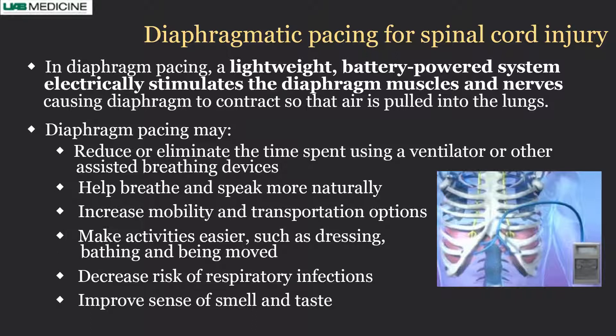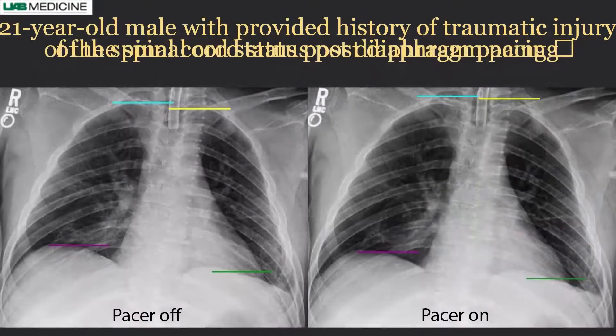Once the lungs start moving, the chances of infection decrease, and it also improves the sense of smell and taste as lung function improves. We had one patient — a college football player who became quadriplegic at the C-spine level during a game. He had a long-term tracheostomy and underwent diaphragmatic pacing. We evaluated his diaphragm function after pacing with DDR.